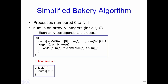We will start with the simplified analysis of the Bakery algorithm. This algorithm solves the critical section problem when there are n processes, all accessing the same critical section. There is also global shared data known as num — an array of size n where each process has a particular index. For instance, process 0 has num[0], process 1 has num[1], and so on. At the start of execution, all values of num are initialized to 0.